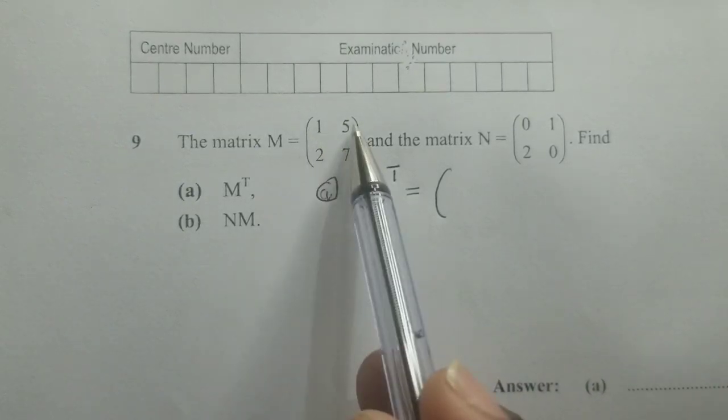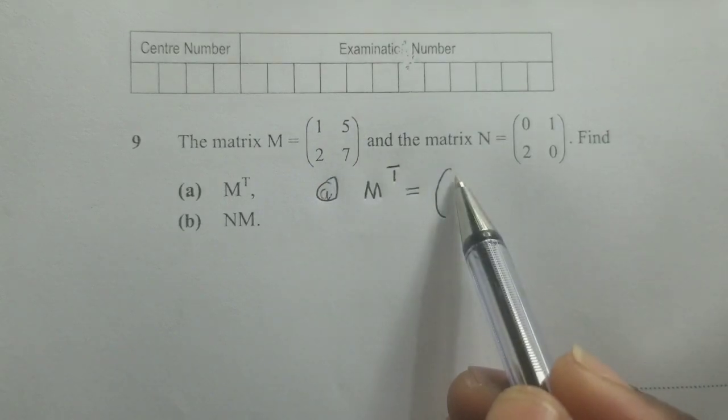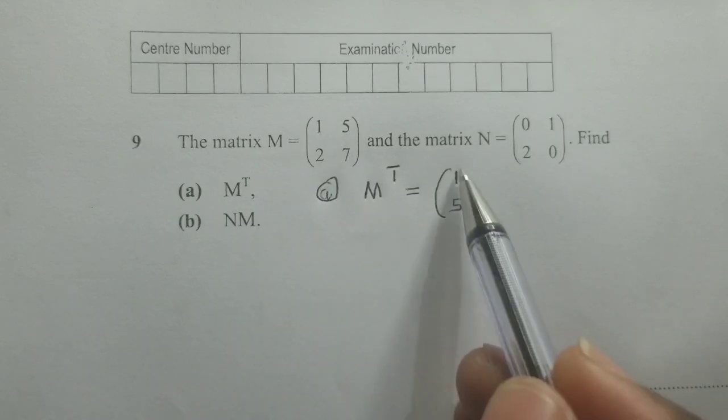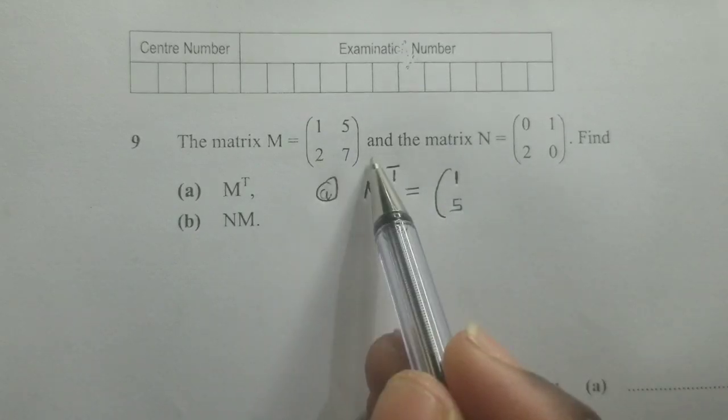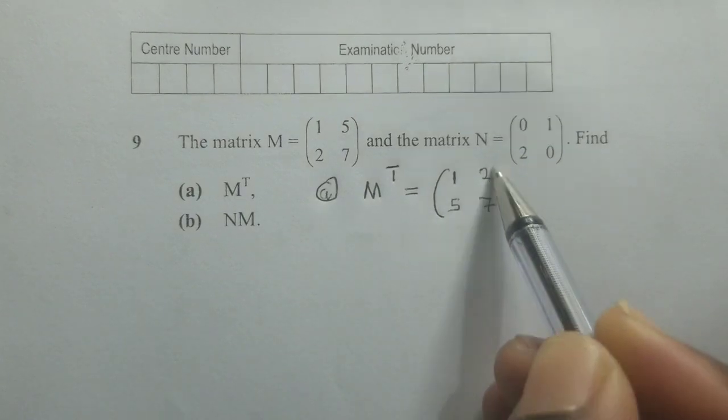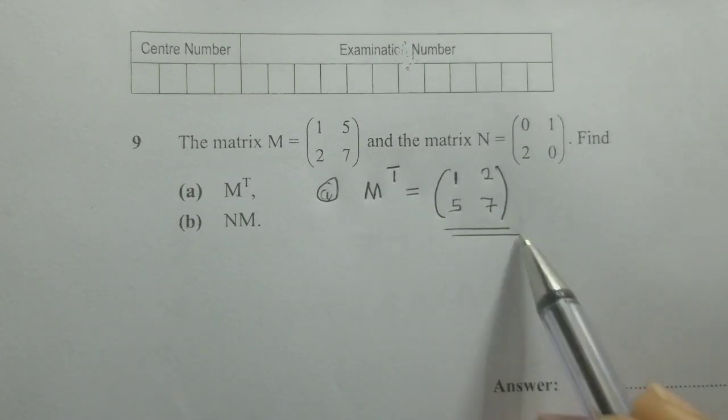So change the row, this is a row, let it become a column. So it will be 1 and 5. It was like this, it will be like this. You come to this row, also change it to a column, it will be 2, 7. So this is our answer for question A.